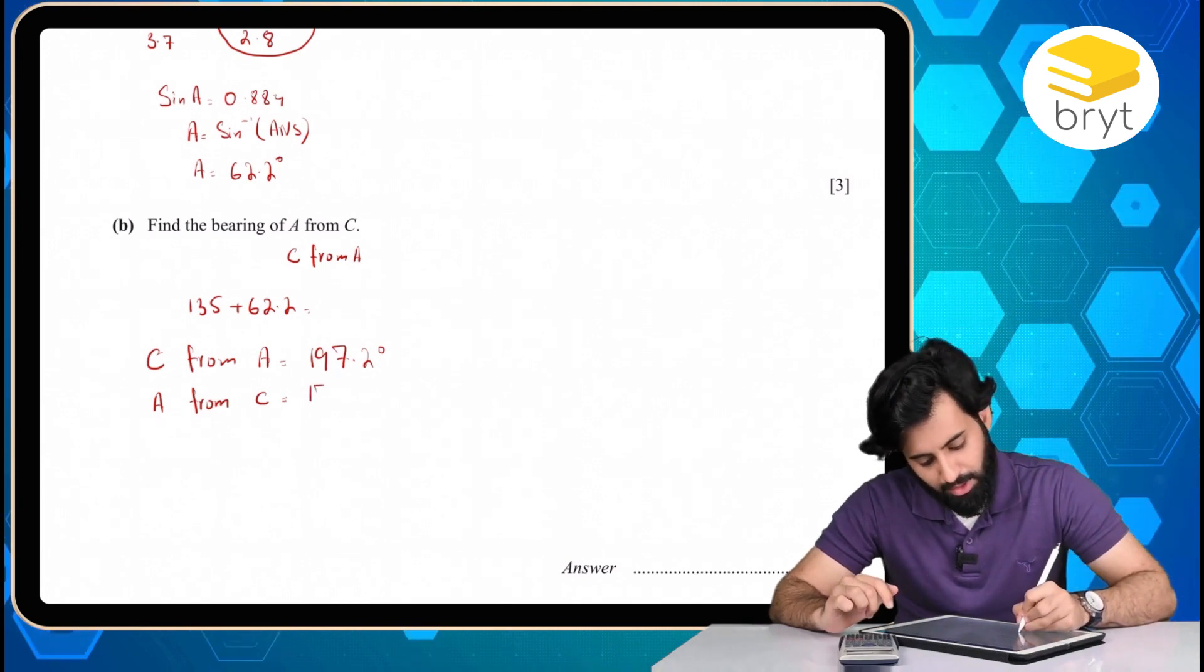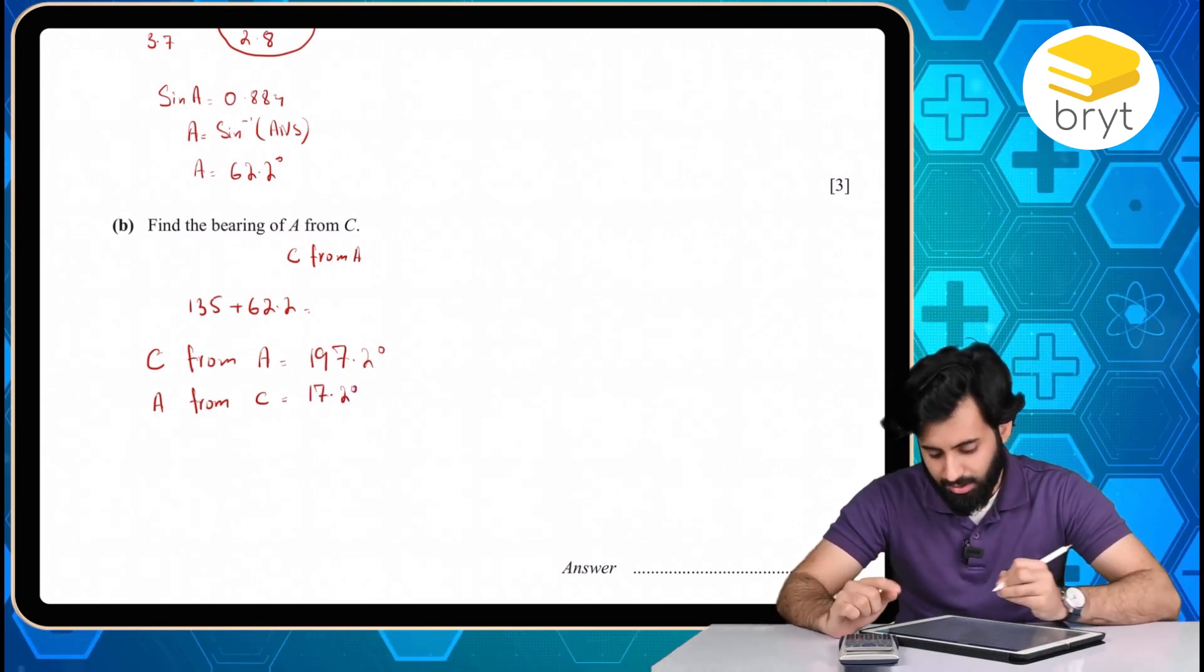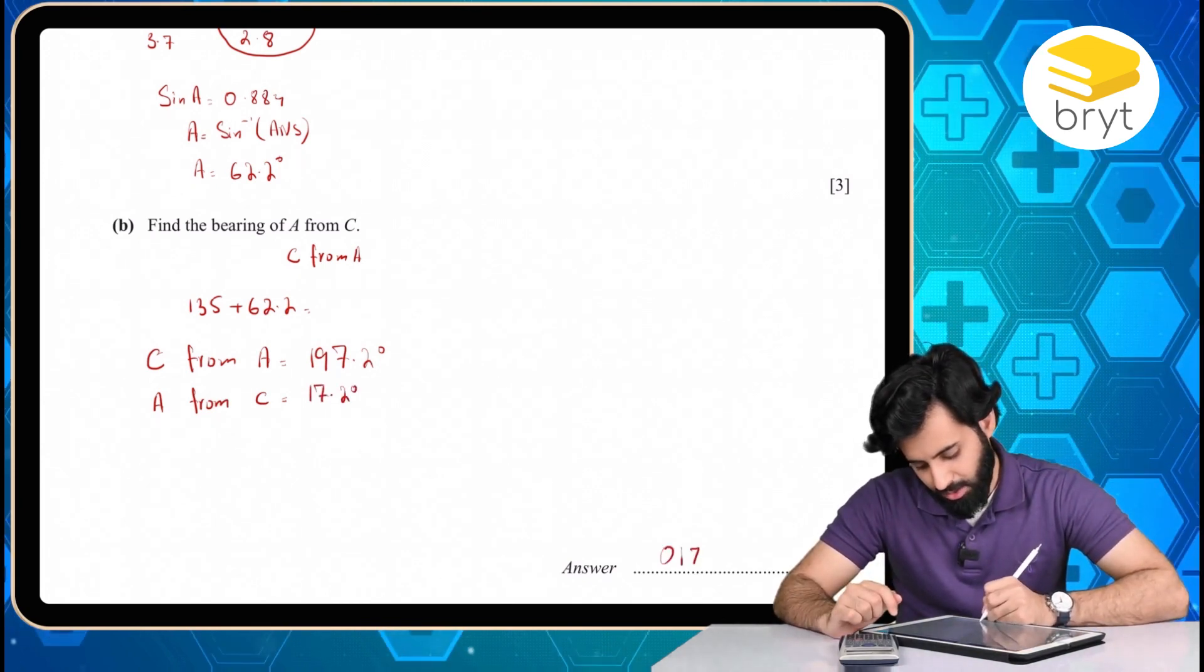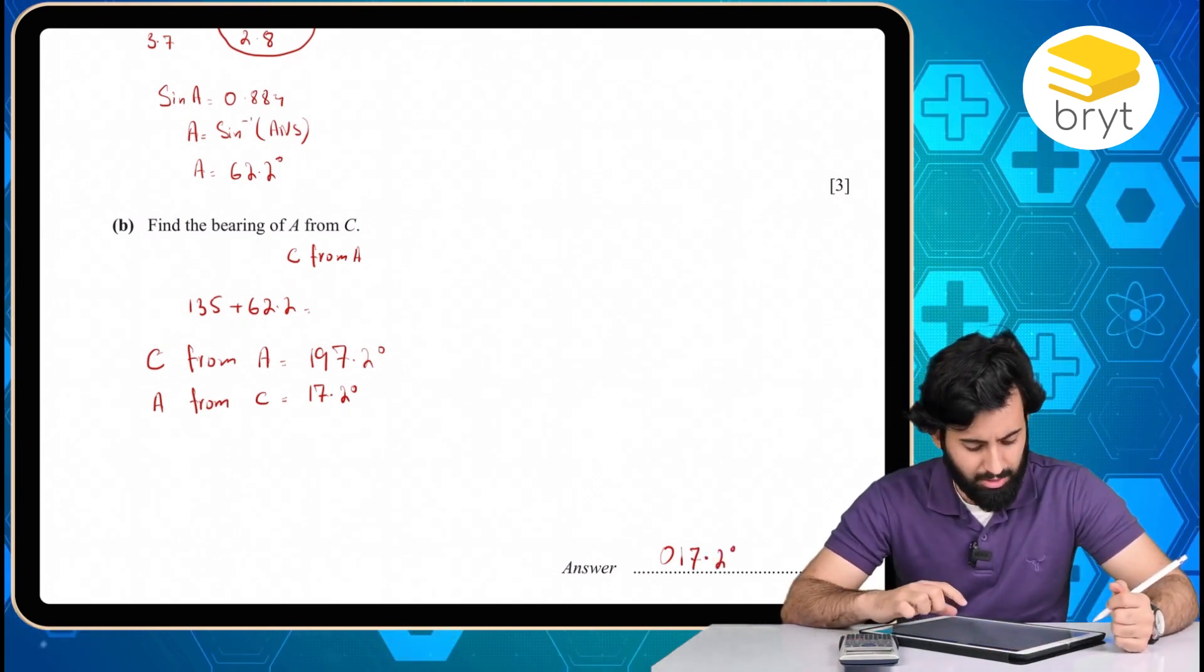I get 17.15, or in other words, 17.2. But since this is bearing, I'm going to write this as 017.2 degrees. So there you go. That's our final answer.